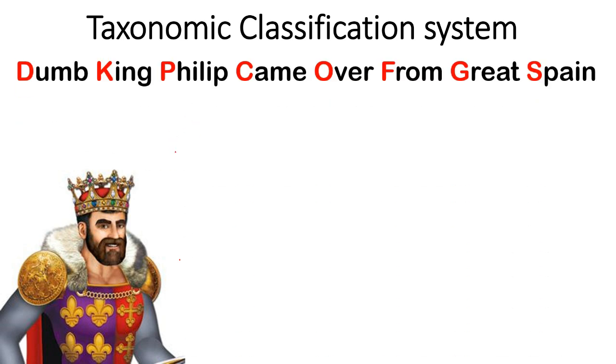That is all, guys. If you remember 'Dumb King Philip Came Over From Great Spain,' for every single word I've written here, the first letter is in red color. That letter denotes some taxonomical classification hierarchy.